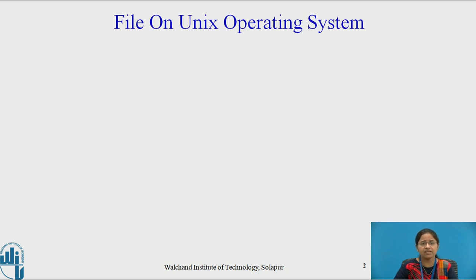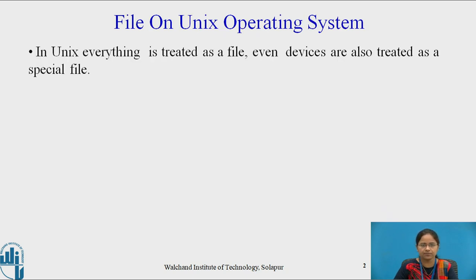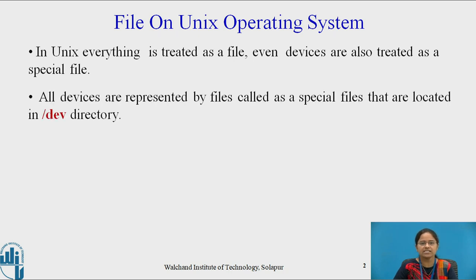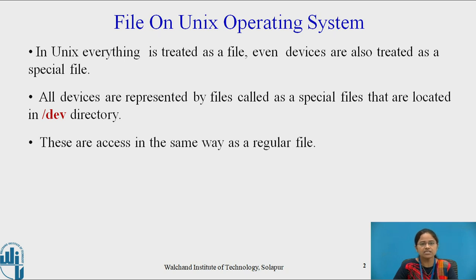Now, how is a file created in the Unix operating system? In Unix, everything is created as a file — even devices are created as a special file. All devices are represented by files called special files that are located in the /dev directory. These are accessed in the same way as a regular file.